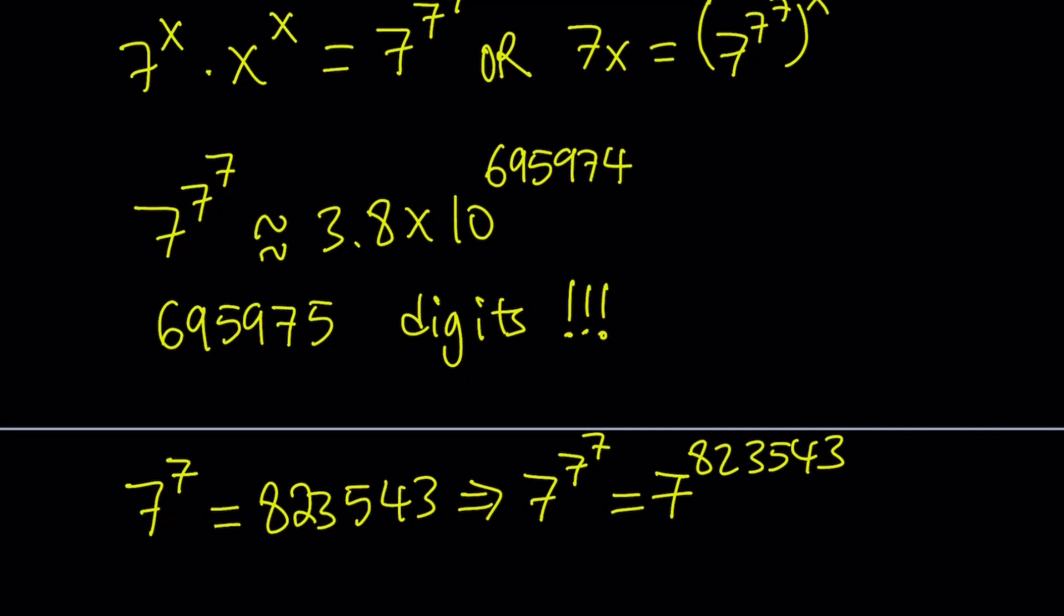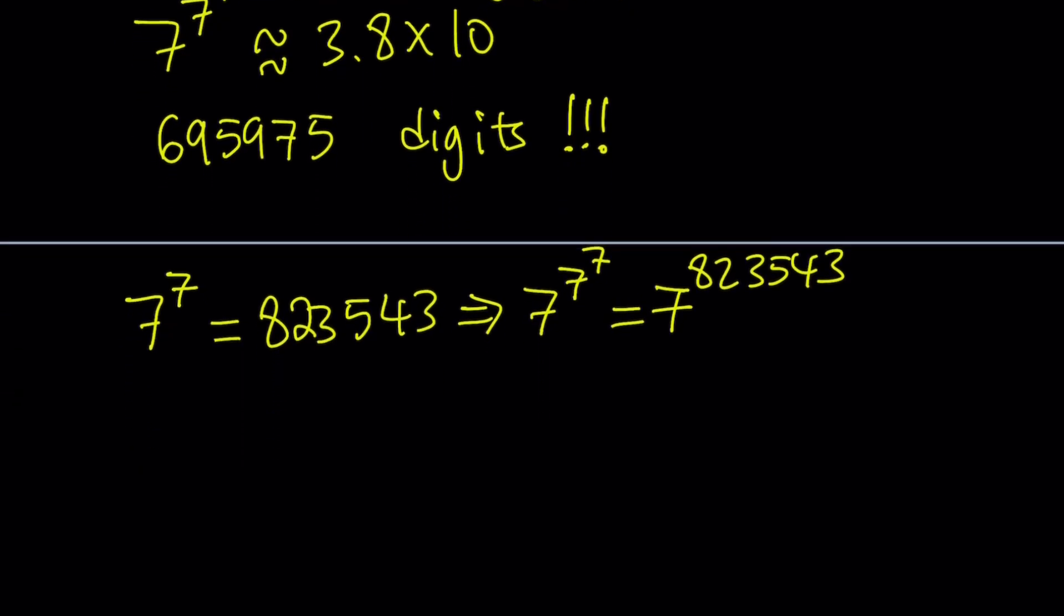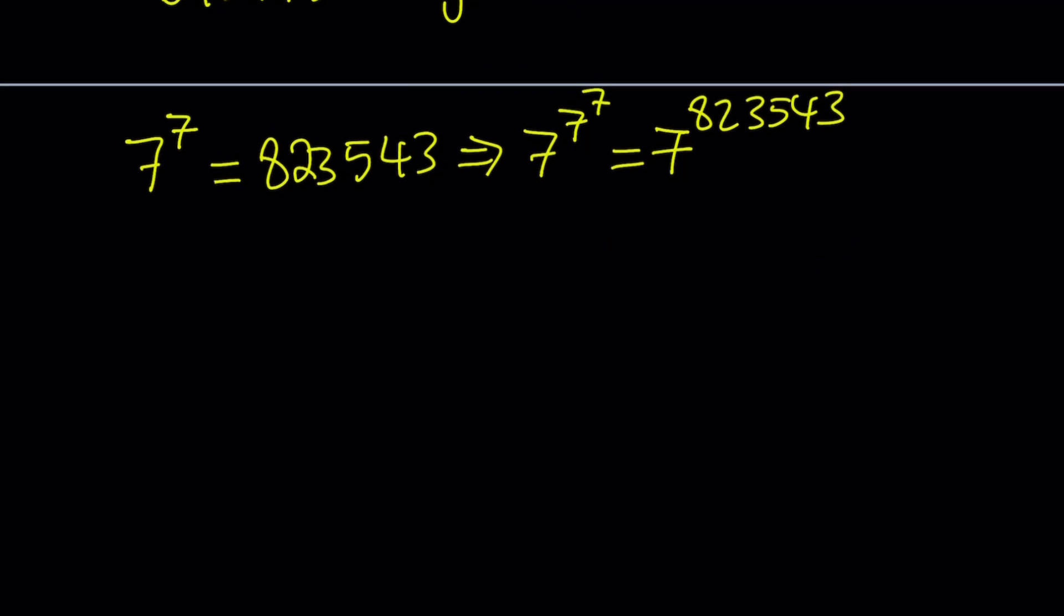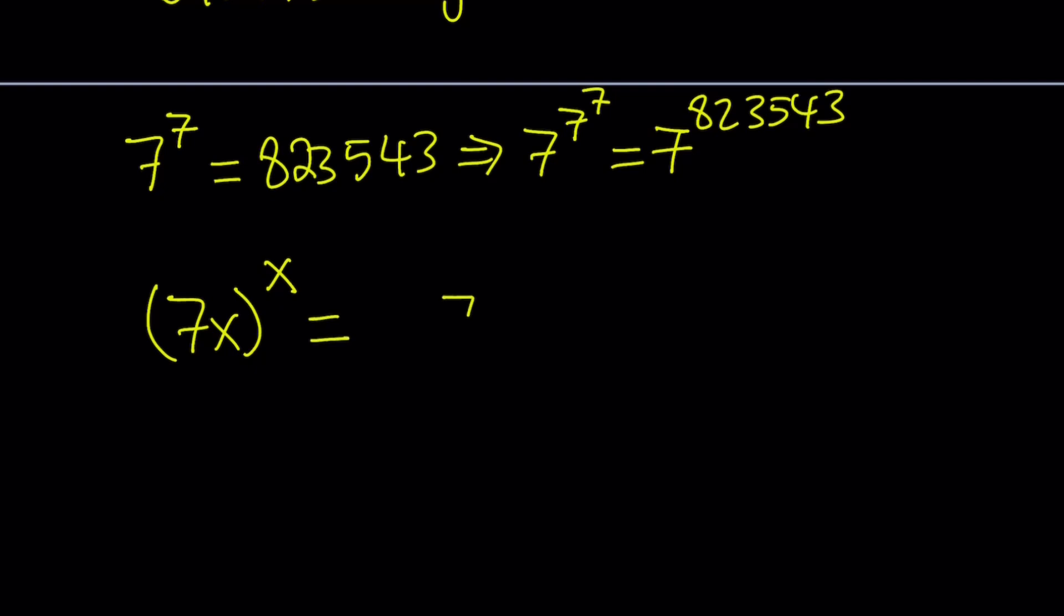Anyways, enough chit-chat. Let's go ahead and get to work. So, we have 7x to the power x, right? And on the right-hand side, we have 7 to the power 7 to the power 7. Now let's go ahead and raise both sides to the 7th power. Now why are we doing it? Because it's going to help us solve the problem.